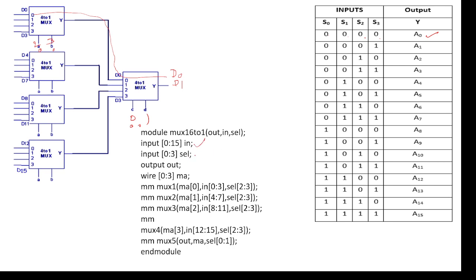For the 16 to 1 MUX, there are 16 inputs, 4 selection lines, and a single output. There are 4 wires declared. There are 4 multiplexer instances. For MUX instance 1, the output is MA0 — you can use any name — with inputs D0, D1, D2, D3, and selection lines 2 and 3. We write all 4 multiplexer instances similarly. The 5th multiplexer takes those 4 outputs and produces the final output. That is the way to write the code.